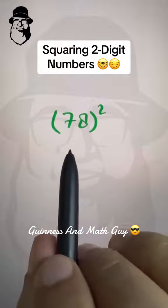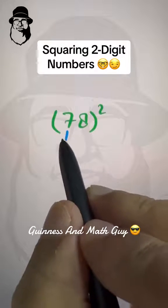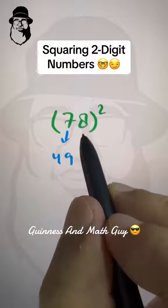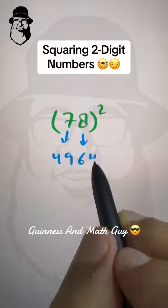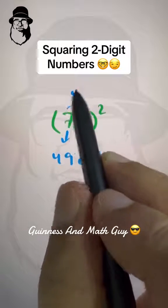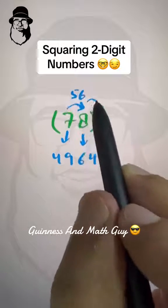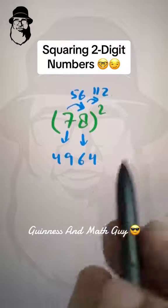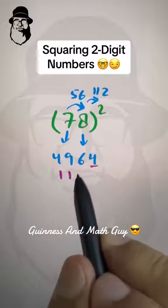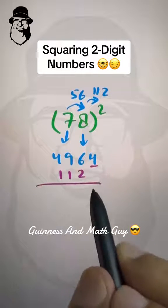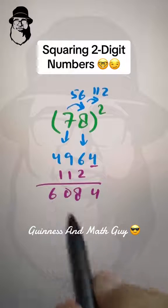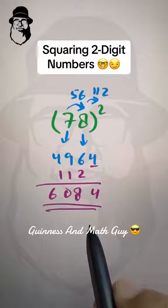Let's square 78 the same way. Square of 7 is 49, square of 8 is 64. Then we multiply: 7 times 8 is 56, times 2 is 112. We leave one place from the right and write 112, then add them up: 4, 8, 10, 6 — so 6084 is your answer.